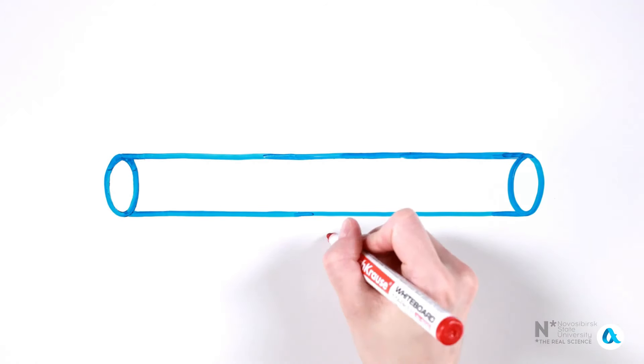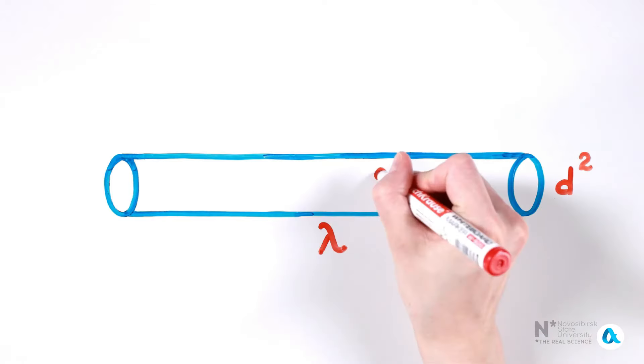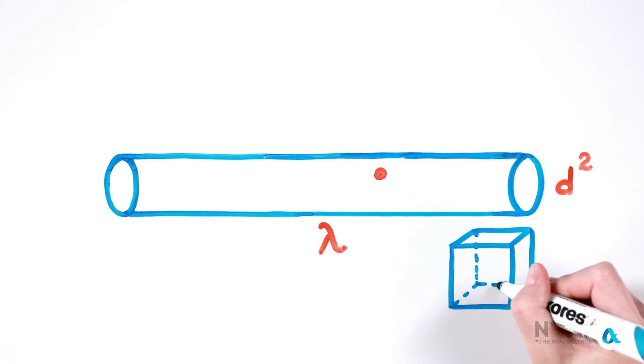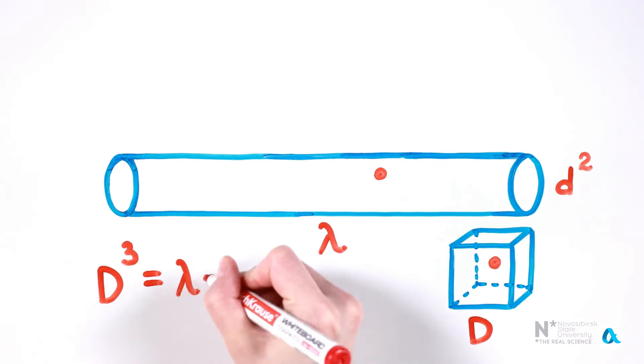To estimate the mean free path of a molecule in air, we will proceed exactly as we did when estimating the mean free path of a laser beam in a forest among the trees. Let's draw a tube whose length is equal to the mean free path of a molecule, lambda, and whose cross-section is estimated as the square of the molecule's diameter. On average, there is one molecule in the volume of this tube. On the other hand, each molecule actually occupies a volume of d cubed, where d is the average distance between air molecules. So d cubed essentially is equivalent to lambda times d squared.